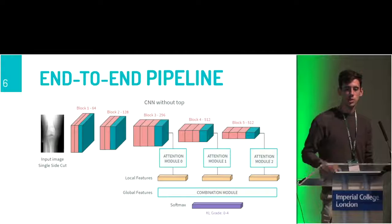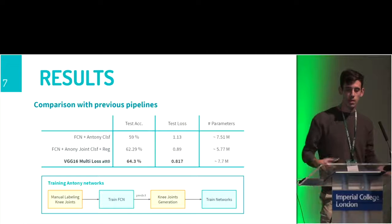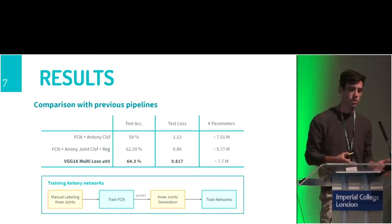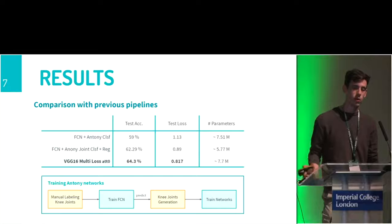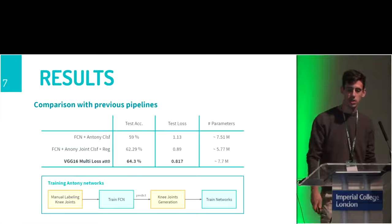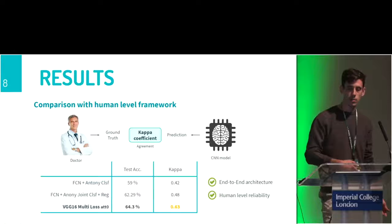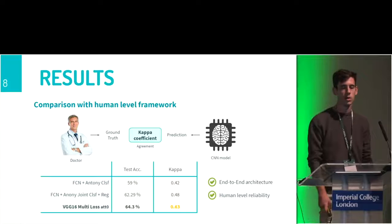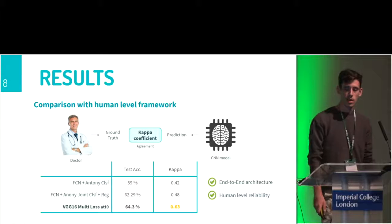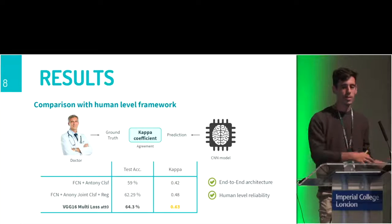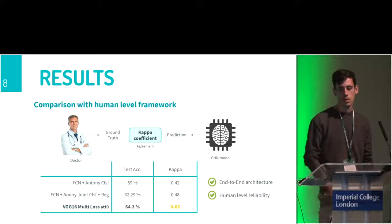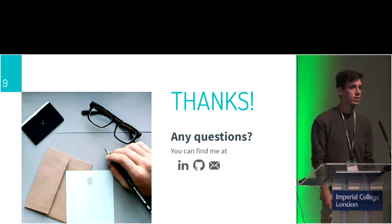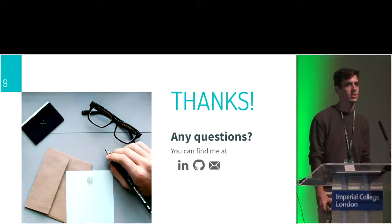Using these methods, we avoid the segmentation step to locate the knee joints and outperform other methods that use a pre-localization step. We also reach human-level accuracy using the kappa coefficient to compare human performance to this convolutional model. If you have any questions or want more details, I'll be at the poster session downstairs. Thanks so much.